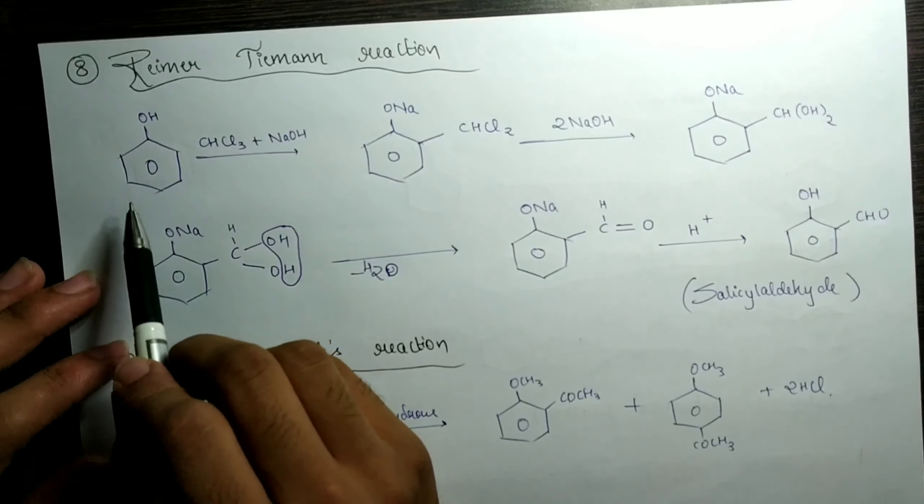We again add NaOH in excess. First one Cl is removed and OH is added, giving CHCl(OH). In the next step another Cl is removed and we get another OH, giving CH(OH)₂. Two OH groups on a single carbon atom are very unstable, so a water molecule is removed and we get C=O with an H — that is an aldehyde group. We then add acid in the form of H⁺ ions, Na is replaced by H, and this is called salicylaldehyde. Please remember the name salicylaldehyde — you have to write this as the final answer.